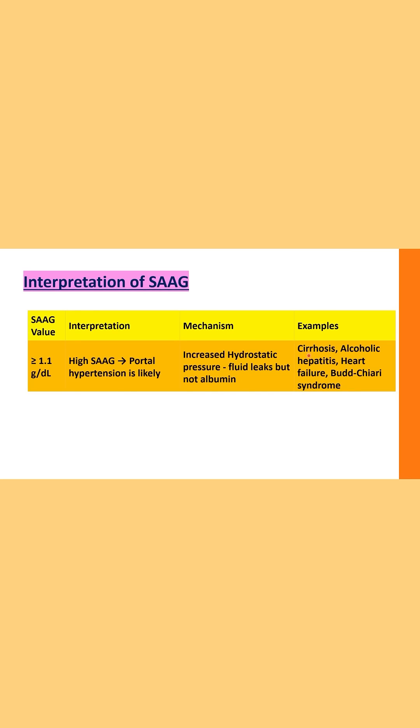Examples of high SAAG conditions are cirrhosis, alcoholic hepatitis, heart failure, and Budd-Chiari syndrome.